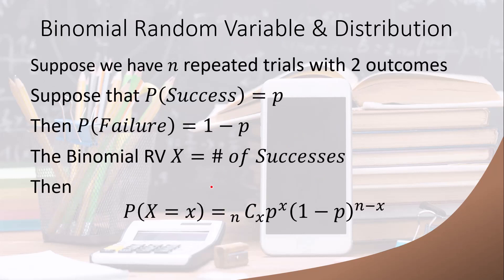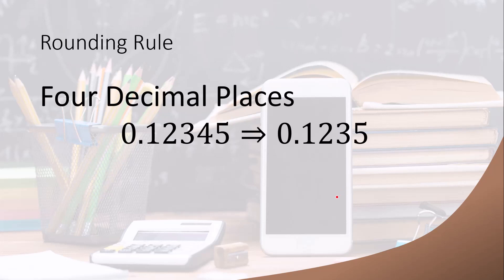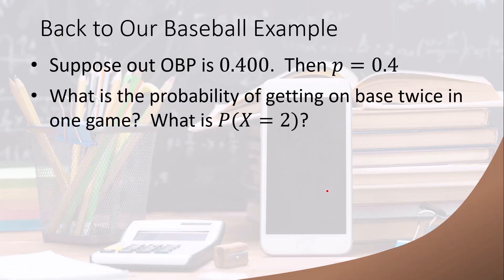Suppose we have n repeated trials with exactly two outcomes, and the probability of success is p. Then the probability of failure is 1 minus p. Let the binomial random variable X equal the number of successes. The probability that X equals a particular value x is: n C x — the number of ways to choose x successes from n trials — times p raised to the x power, times (1 minus p) raised to the (n minus x) power. We round to four decimal places, using the fifth decimal place to decide.